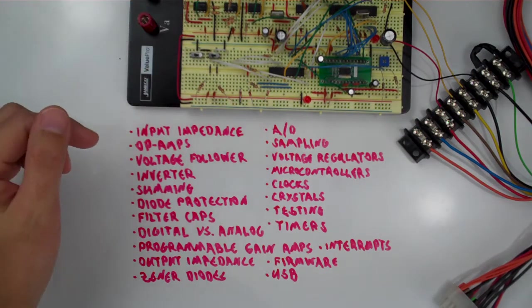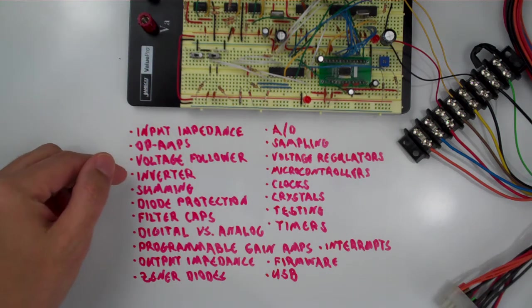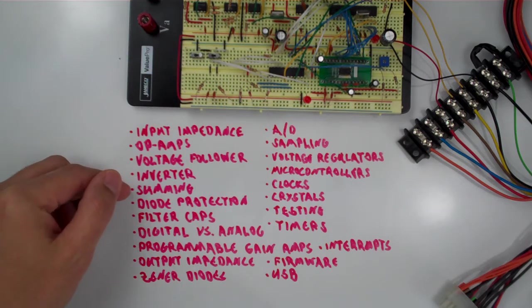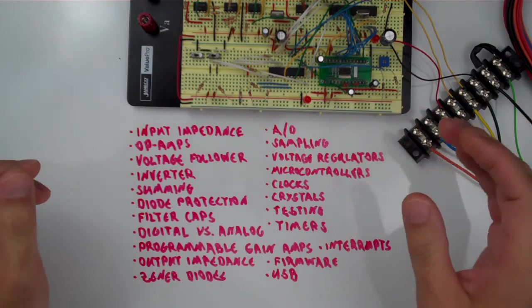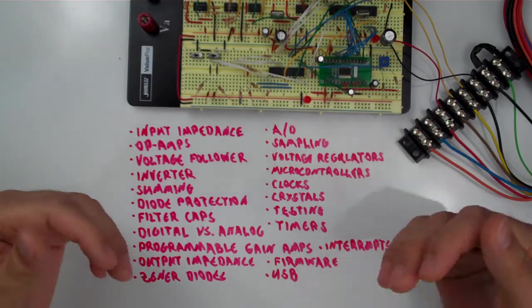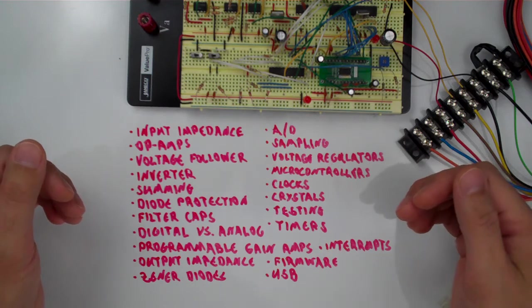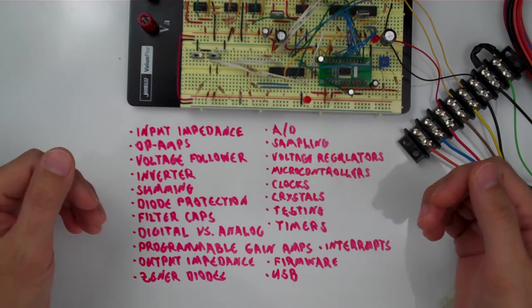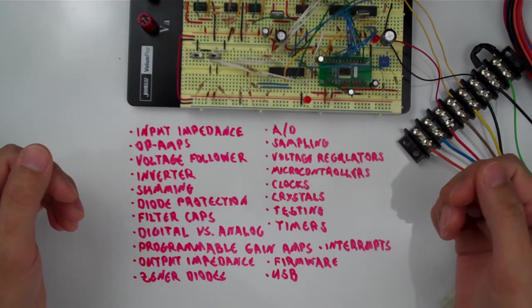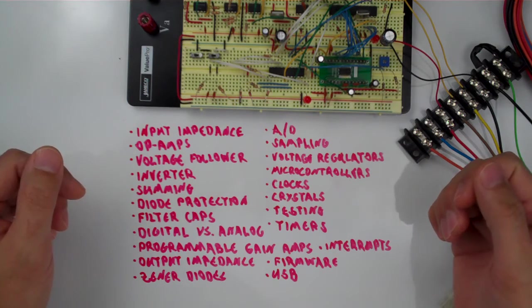The first op amp is what's called a voltage follower. And then we've got inverters. We've got a summing amplifier in here. And don't worry if you don't understand what all these things are yet. I just wanted to give you a kind of a preview of what this project, what you're going to learn with this project.